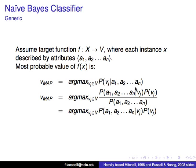Doing some math — because this is Bayesian, this is conditional probability — we can use Bayes' rule, which basically flips the conditional over: the probability of a1, a2, ..., a_n given v_j, times the probability of v_j, divided by the probability of the attributes. Now, the denominator doesn't change as we vary the value v_j, so we can treat it as a constant. Therefore, the argmax is the same argument that maximizes just the numerator.